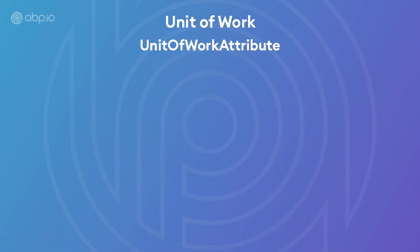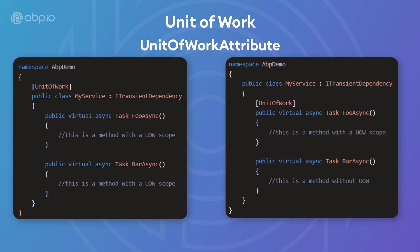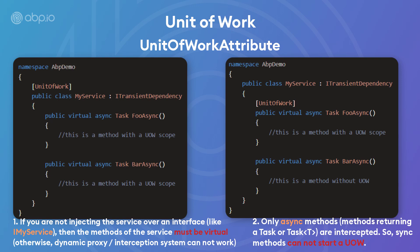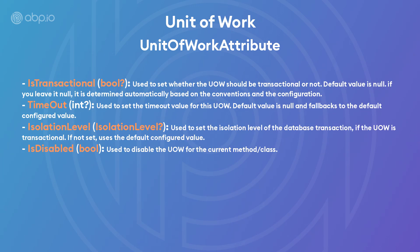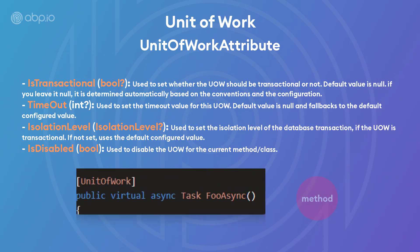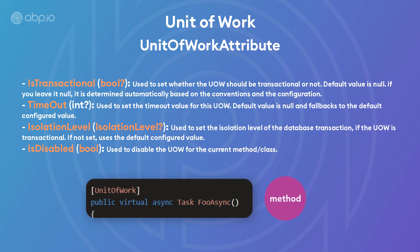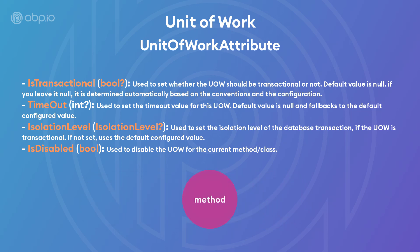Secondly, there is the unit of work attribute, which has much more possibilities — like enabling or disabling a unit of work and controlling the transaction behavior. It can be used on a class level or a method level, and the same rules apply. If a method is called within an ambient unit of work scope, the unit of work attribute is ignored and the method participates in the surrounding transaction.